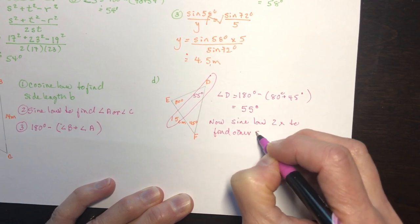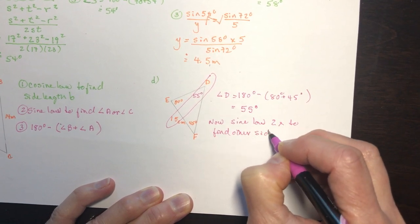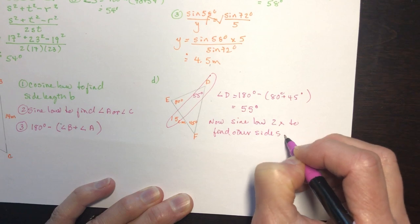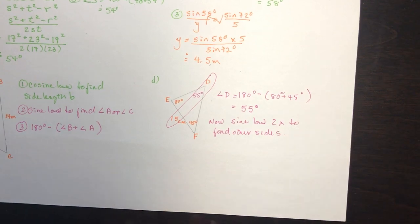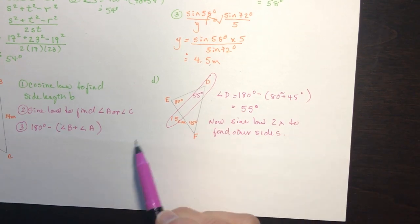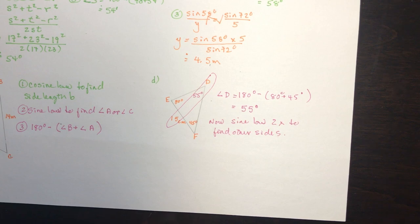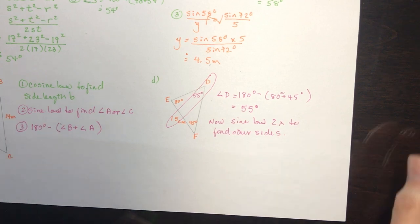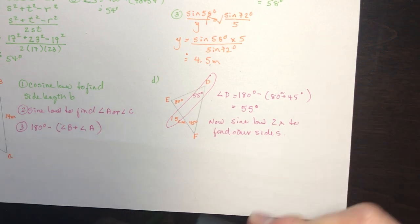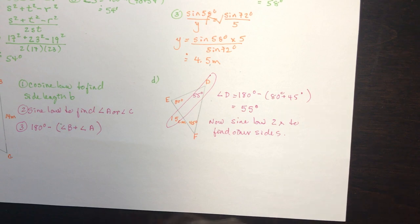It's important to know where to start. If you can see the X-pattern, it's the sine law. Otherwise, use the cosine law first to find a side or angle, then switch to the sine law.